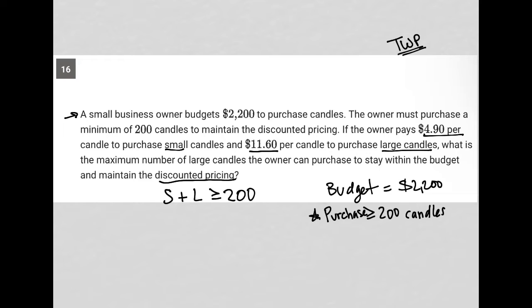We also know that for the cost here, we're paying $4.90 per small candle, plus we're paying $11.60 per large candle, and that we have to be less than or equal to our budget of $2,200. So in essence, we have a system of inequalities here.